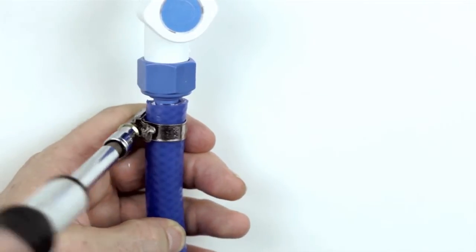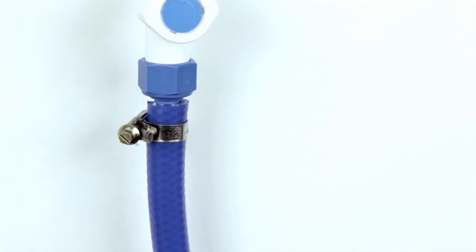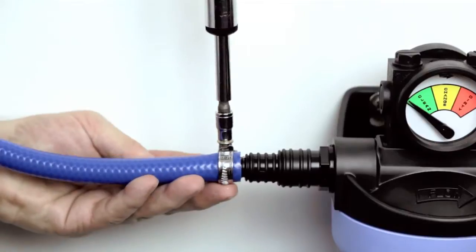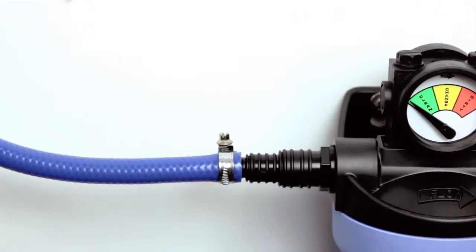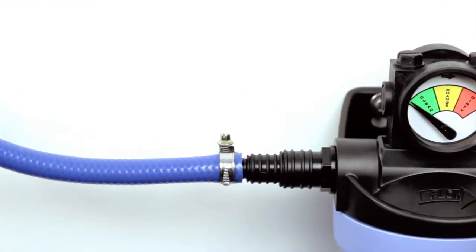Next, fit the blue hose adapter onto the feed water isolation valve and, using the blue hose and security clips, connect the water supply to the inlet of the carbon filter.